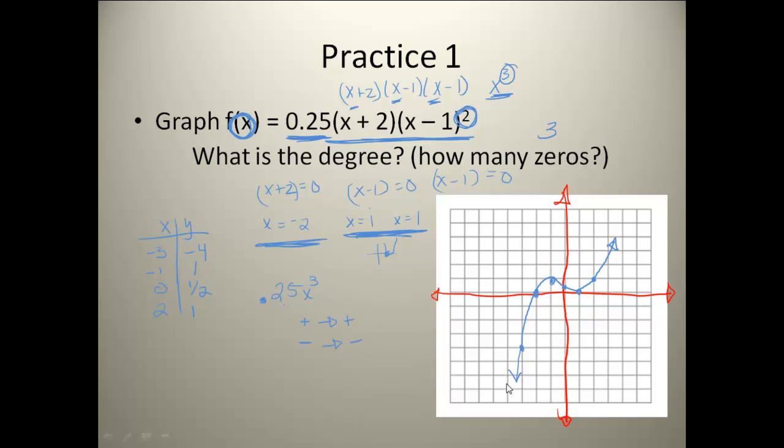So now that I know my end behavior matches, I am going to sketch my graph in there and put my arrows on the end. Now looking at this, this has the shape of a cubic. It's got that squiggle to it, which matches what my degree is.